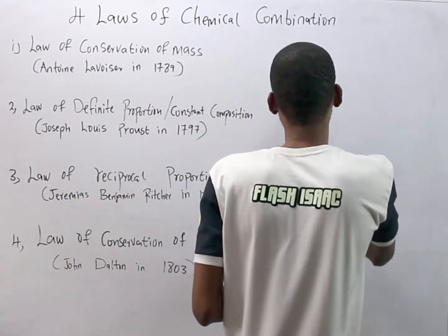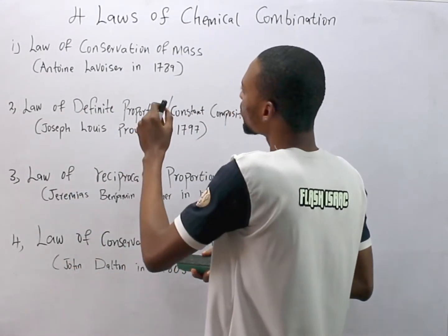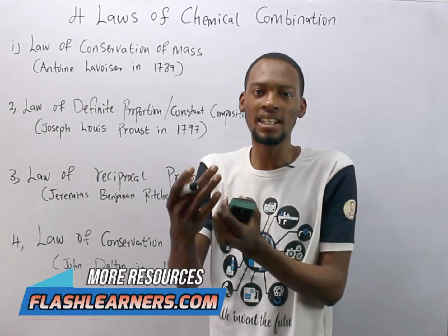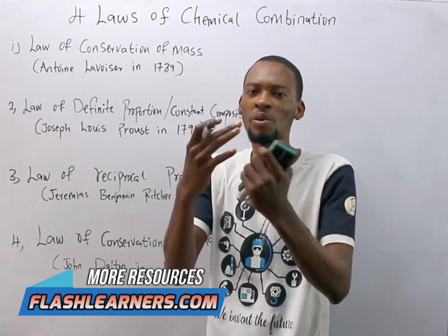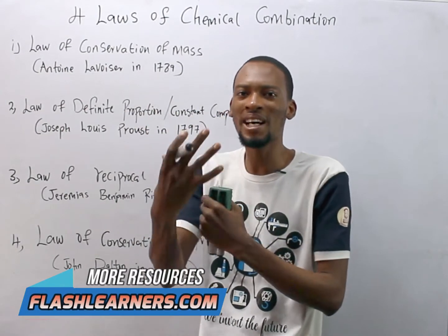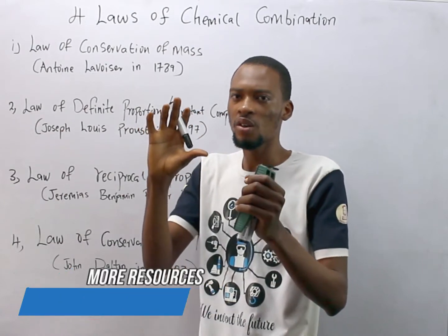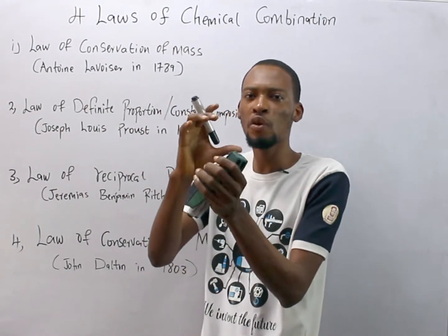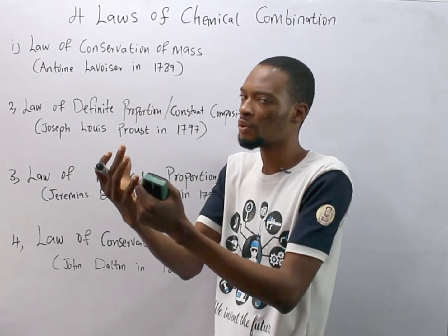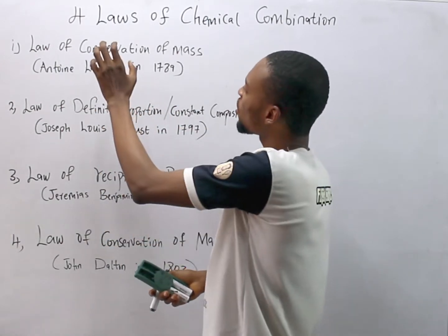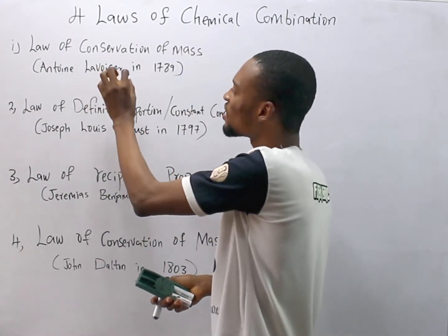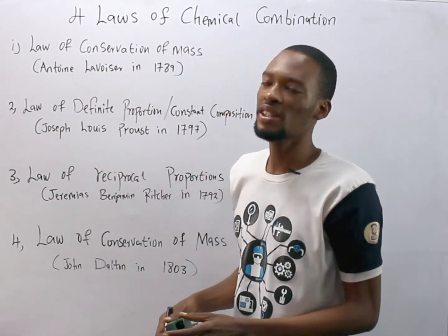The first law states that matter can never be created nor destroyed in a chemical reaction. During a chemical reaction, matter is not created and matter is not destroyed, although it can change from one form to another or from one state to another. That is the law of conservation of mass, proposed by Antoine Lavoisier in 1789.